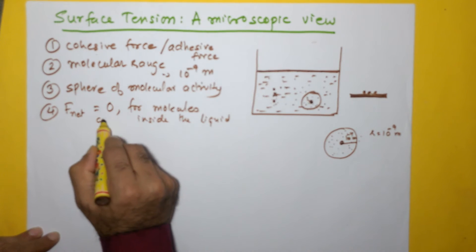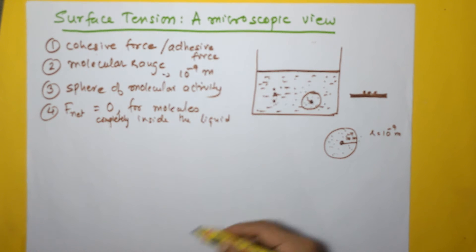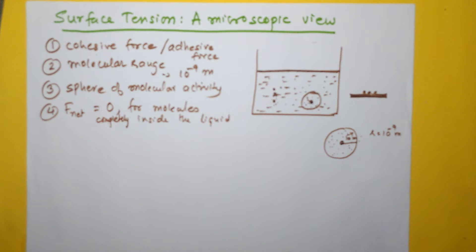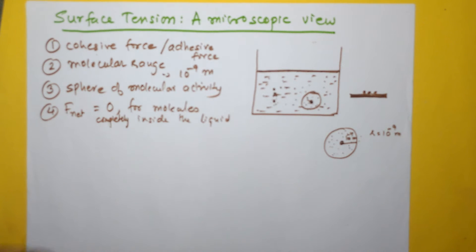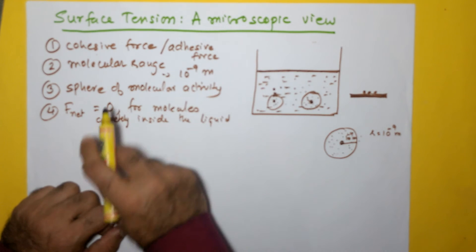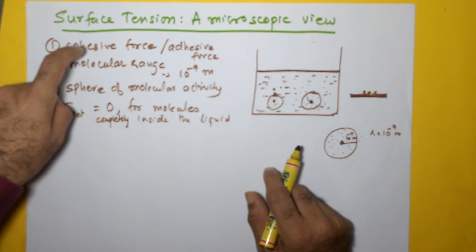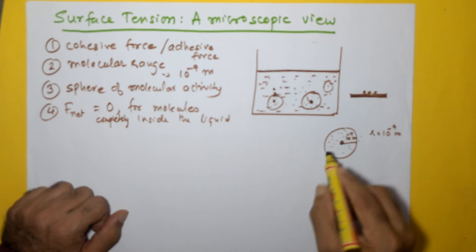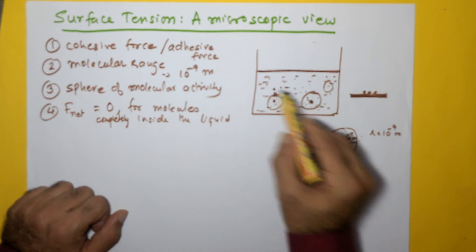I should specify: this applies to molecules completely inside the liquid. As we go along, I will explain what happens differently for molecules which are on the surface of the liquid. If we take any molecule inside, the net cohesive force is zero. But let us now focus our attention on the surface of the liquid.